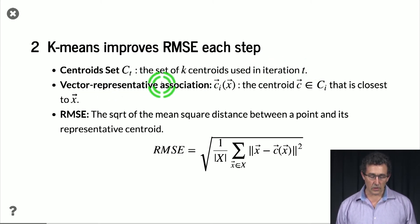Then the vector versus representative association associates each example x with a centroid ci of x, which is basically the centroid in ci that is closest to x. So the RMSE is the root mean squared error, and it's the square root of the mean square distance between the point and its closest centroid, or representative centroid.